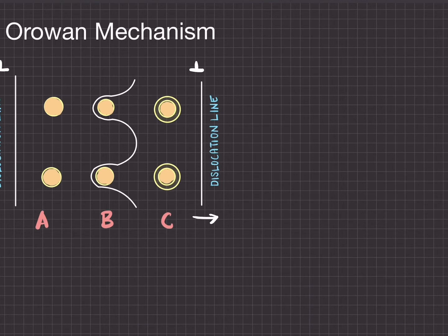When precipitates are incoherent with the matrix, as in an overage state, dislocations will not move past through the particle. Instead, they will bypass through the particle by bowing between them, and this is what we call the Orowan mechanism.